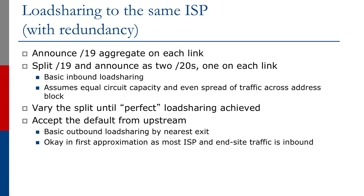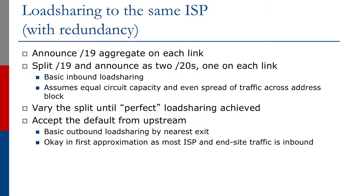Now this is just where we start. Please don't think this will give you perfect load balancing right away — it's unlikely it will. End user traffic throughout the day and evening can be quite variable. But it's a place to start. We divide it into two and see what happens. As we work through this, we vary the split until we get the load sharing we're after. It might be that we have to take one of the slash 20s and divide it into two slash 21s — one on each link.